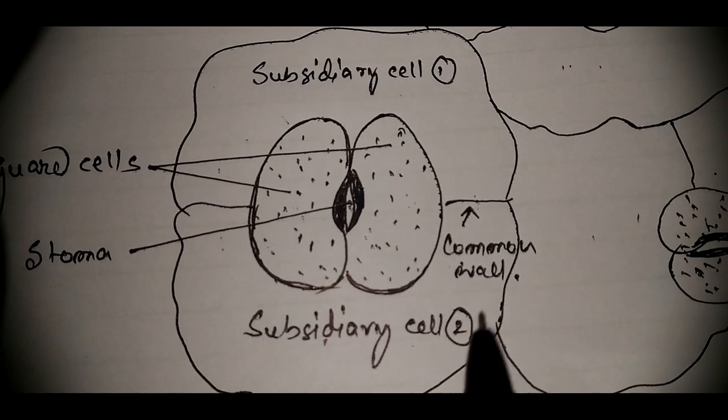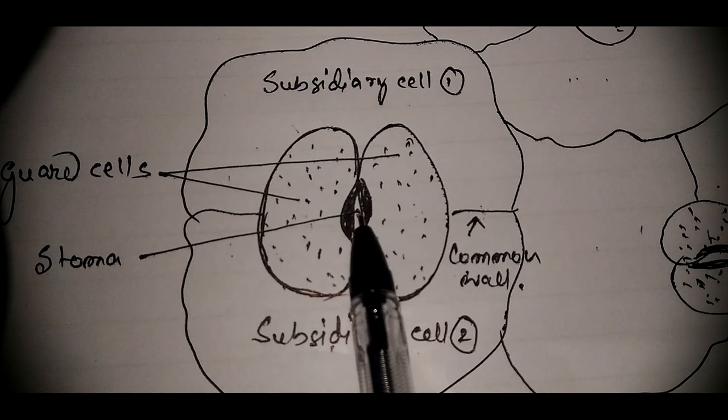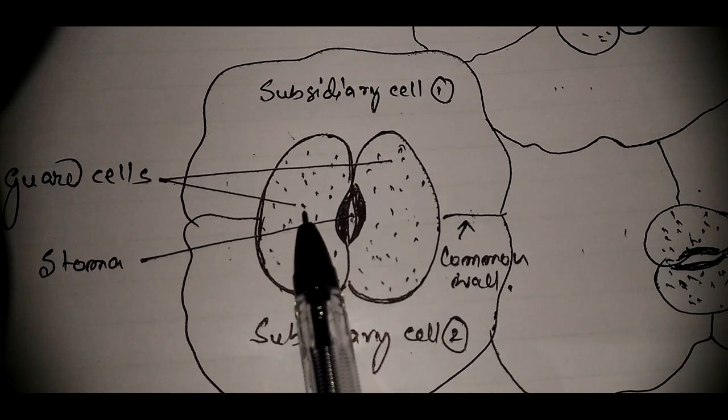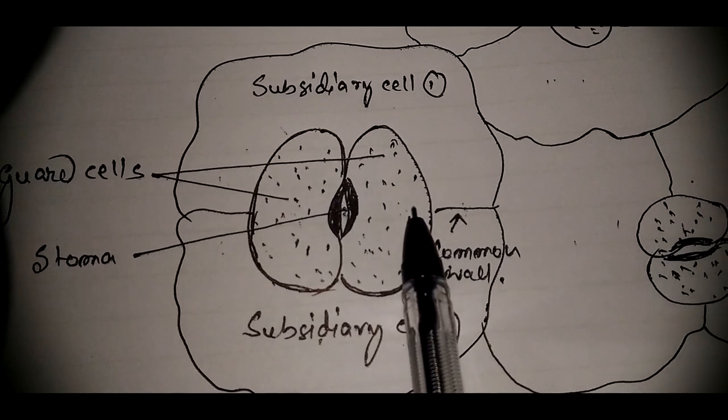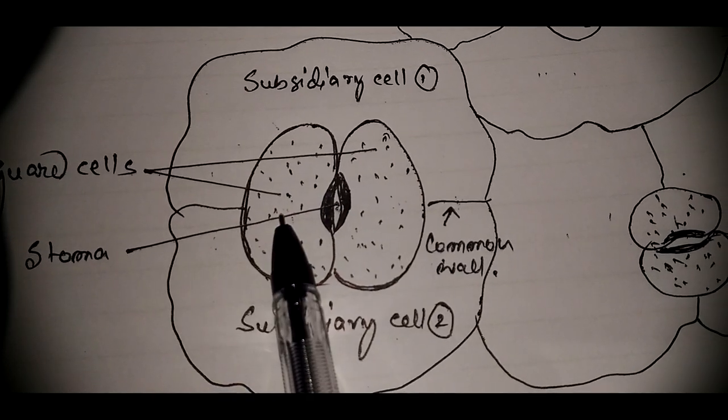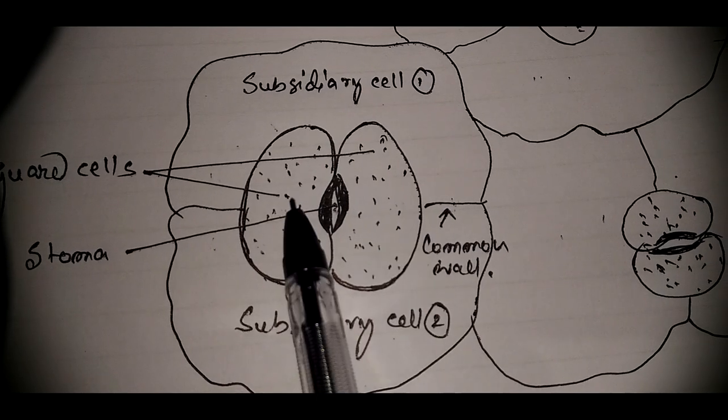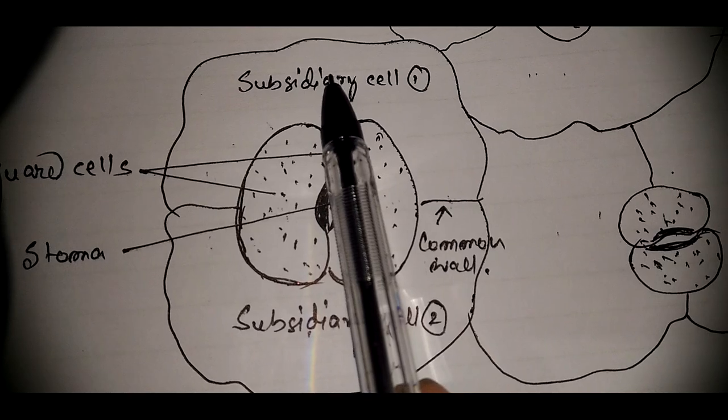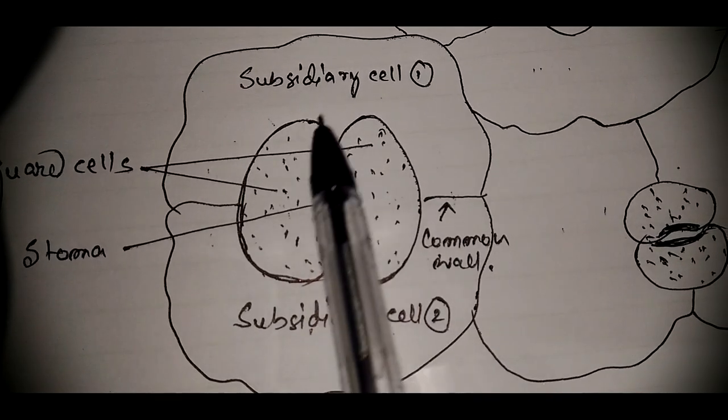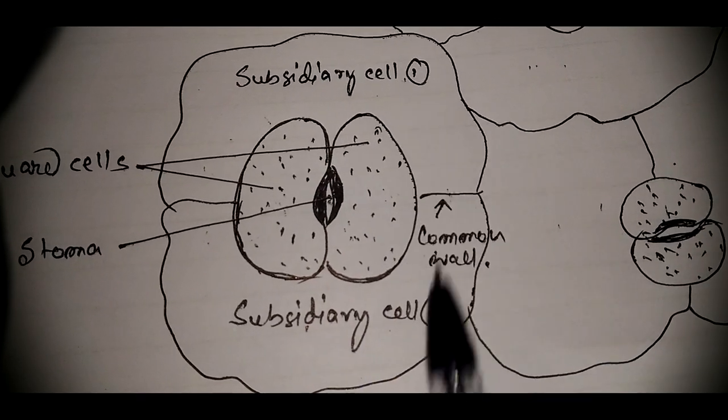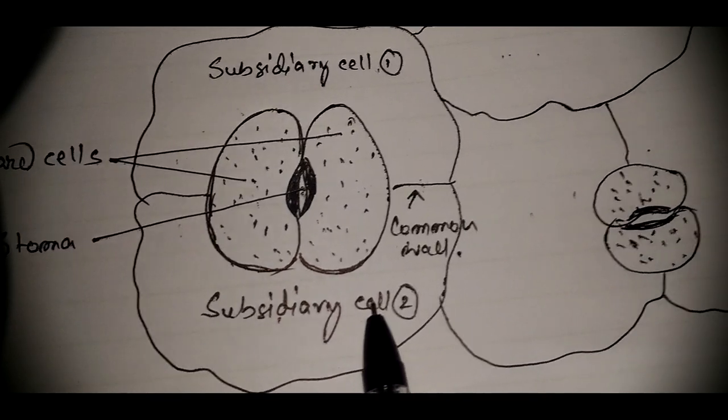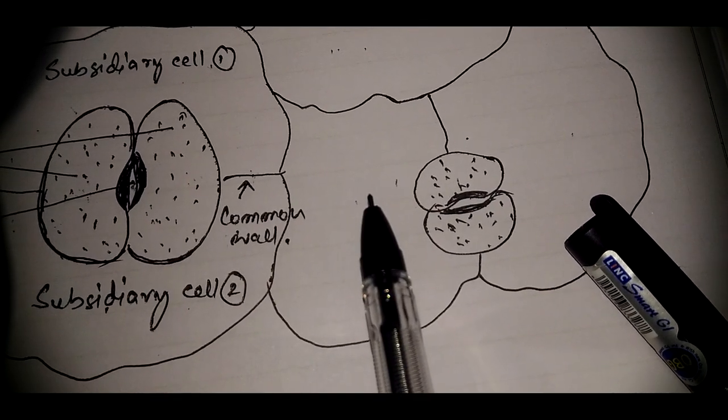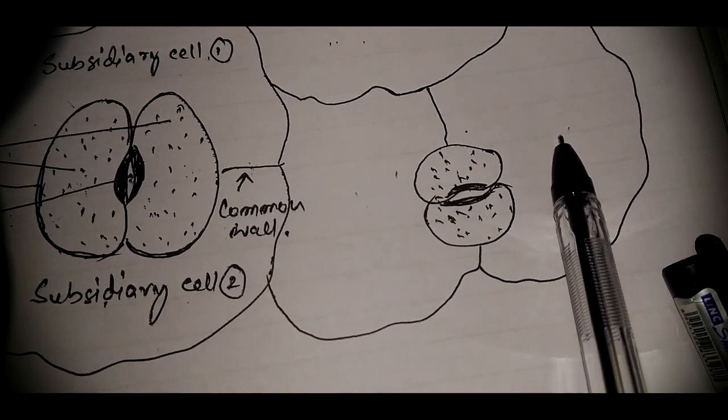Dear students, this is a stoma and it is guarded by these two guard cells. These guard cells are surrounded by two subsidiary cells - subsidiary cell one and subsidiary cell two. In this case also subsidiary cell one and subsidiary cell two.